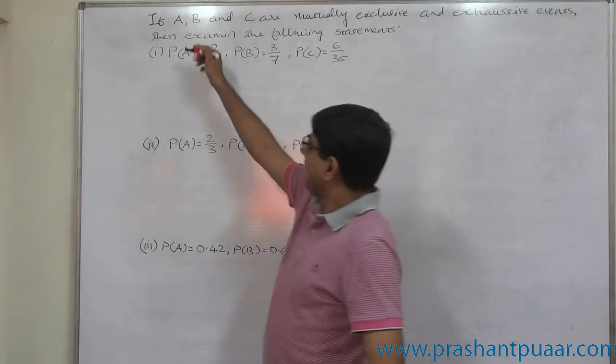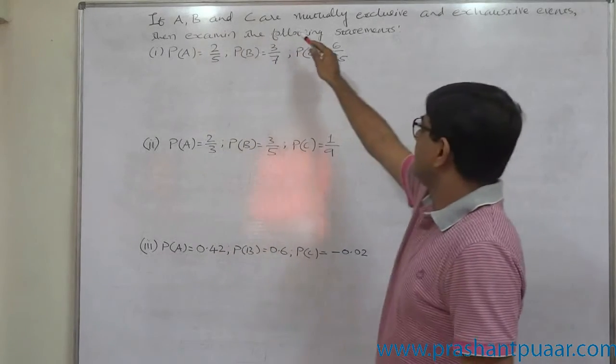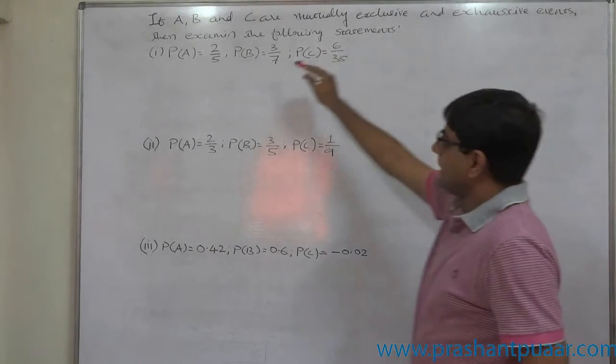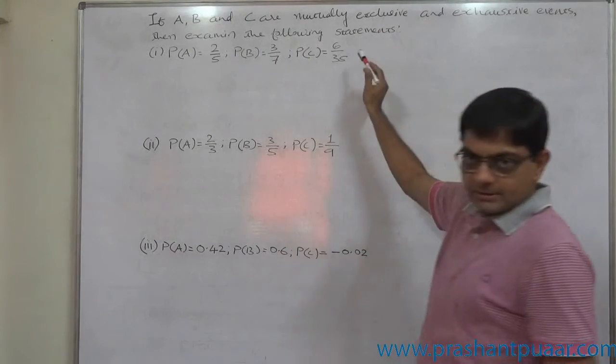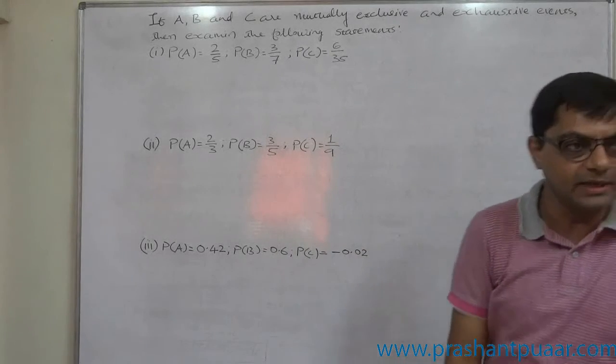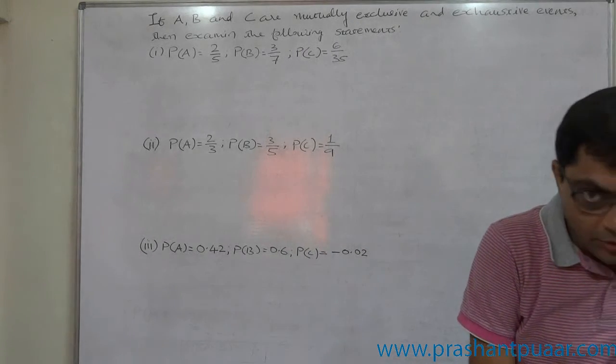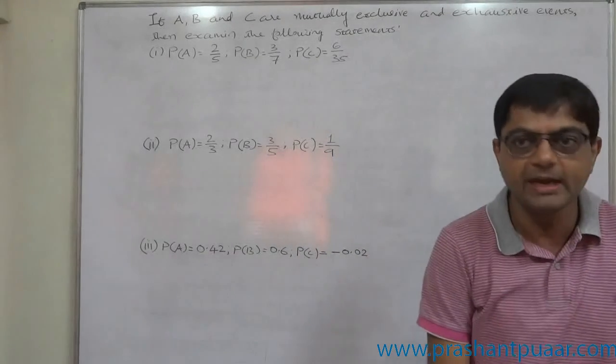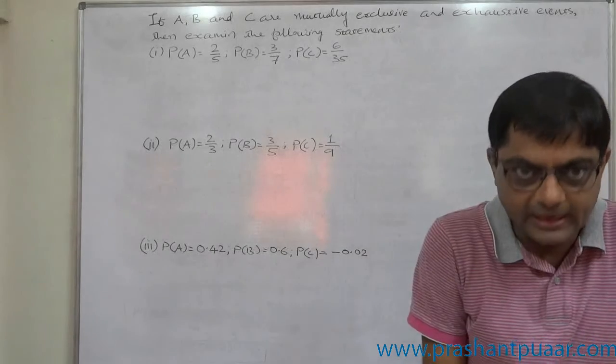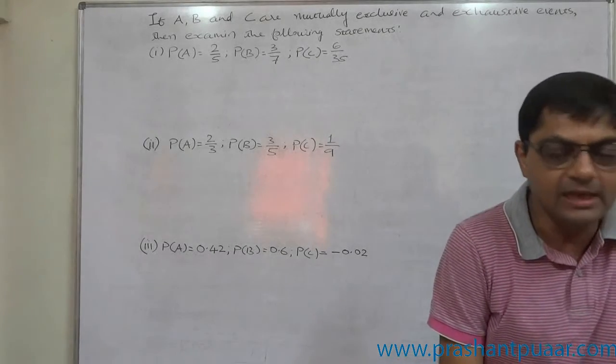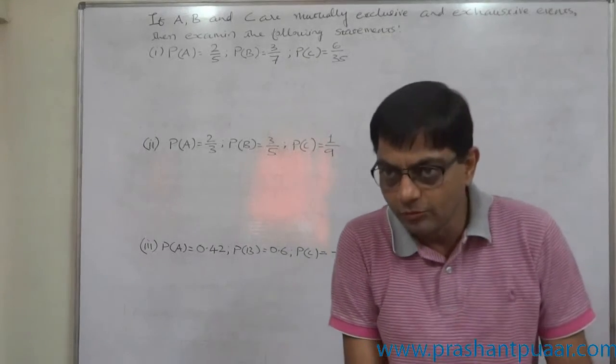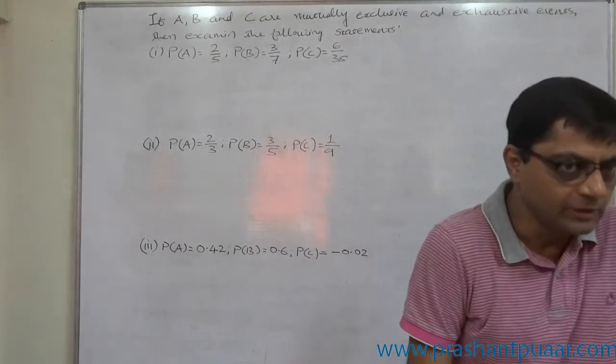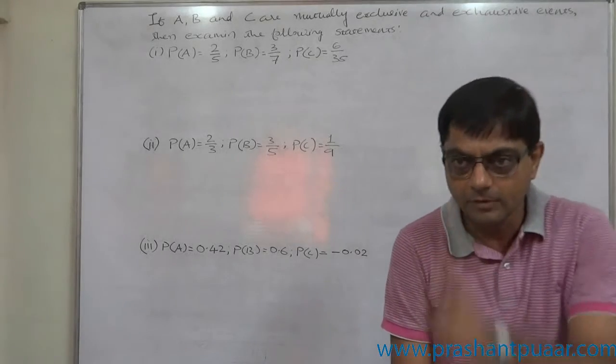If A, B and C are mutually exclusive and exhaustive events, then examine the following statements. What is the simple rule for mutually exclusive and exhaustive events? If A, B and C are mutually exclusive and exhaustive events, then summation of probability of all these three should be one.